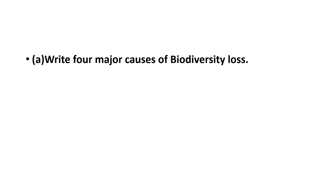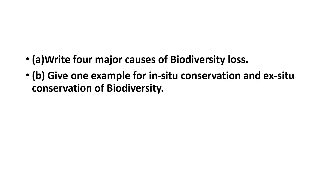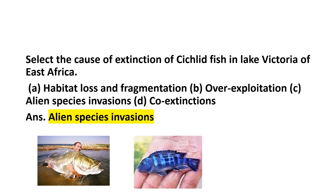Write the four major causes of biodiversity loss and give one example each for in-situ conservation and ex-situ conservation. Another question: select the cause of extinction of cichlid fish in Lake Victoria of East Africa. It is a very important reason for the extinction of fish in Lake Victoria.